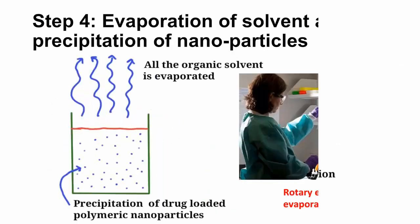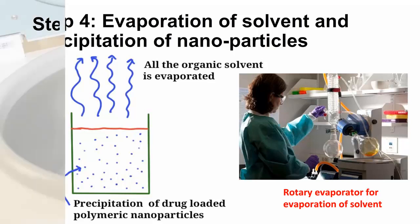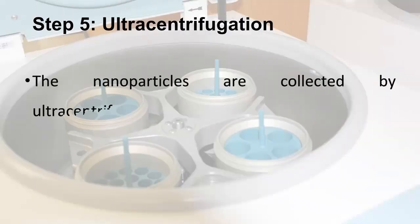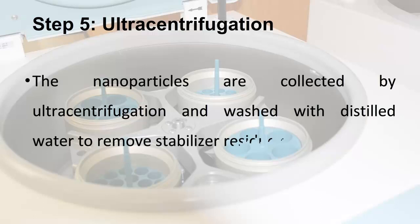The fourth step is the evaporation of solvent and precipitation of nanoparticles. Evaporation is carried out in a rotary evaporator. The fifth step is ultracentrifugation. The nanoparticles are collected by ultracentrifugation and washed with distilled water to remove stabilizer residue or any free drug.